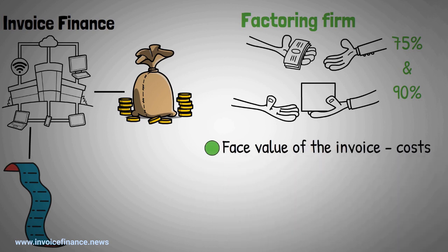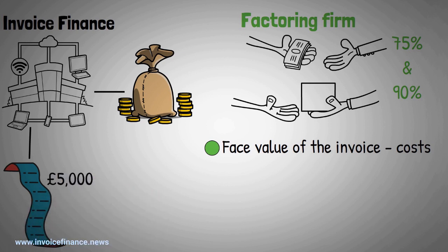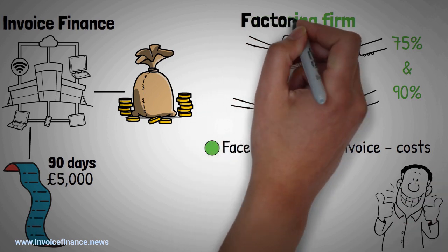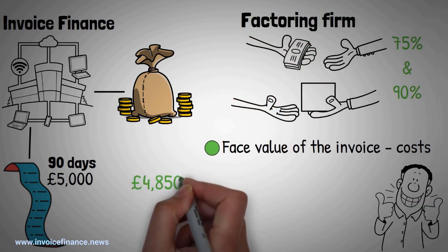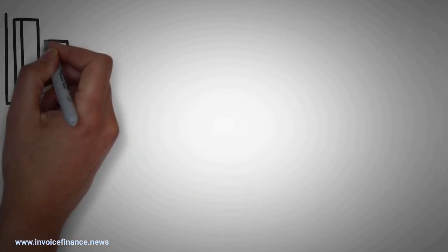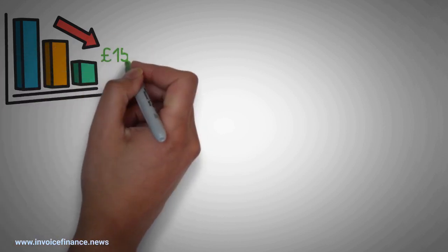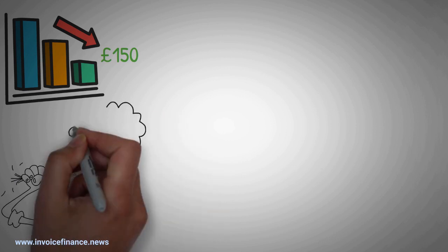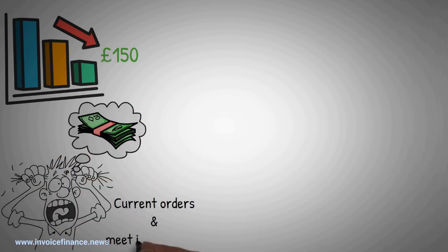So, if a company has an outstanding invoice worth £5,000 that is not due to be paid for 90 days, it might make good financial sense to sell the invoice to a factoring firm for £4,850 in return for immediate payment. While a company might be down £150 on the deal, it might be preferable to a situation where the company desperately needs cash to fulfill current orders and meet its liabilities.